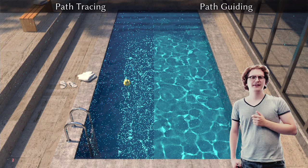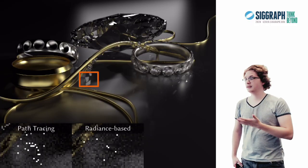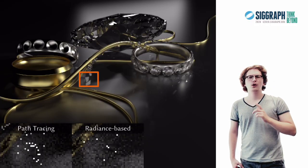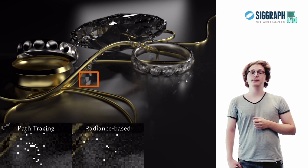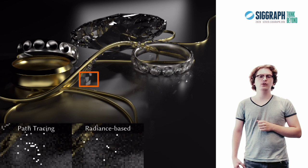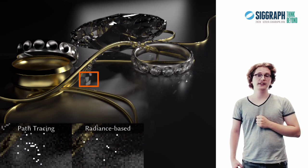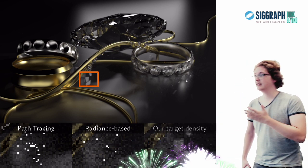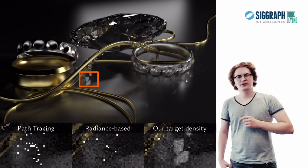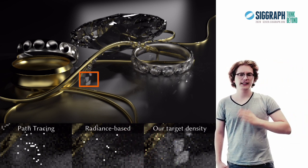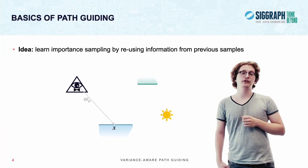However, there's also some scenes where it's not as beneficial, for example the necklace scene. What we're going to present to you today is a technique that's both trivial to implement and causes you no computational overhead, but can greatly improve your guiding in challenging situations like the one depicted here. But before we get into the details, let's take a step back and look at the basics of path guiding.